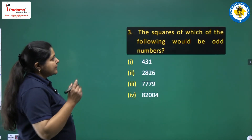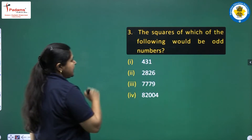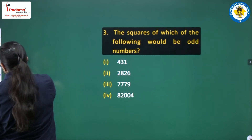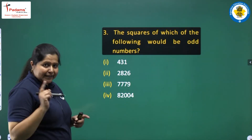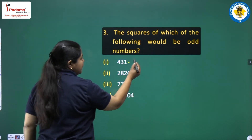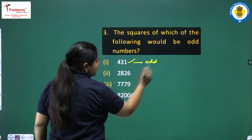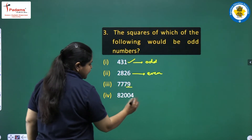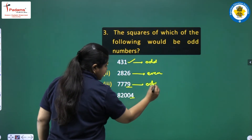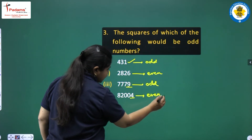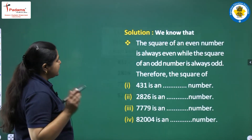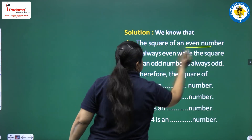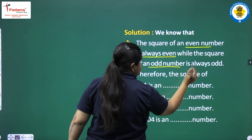The next question: the squares of which of the following would be odd numbers? We learnt that if a number is odd, its square is odd. If a number is even, its square is even. We know that the square of an even number is always even, while the square of an odd number is always odd.